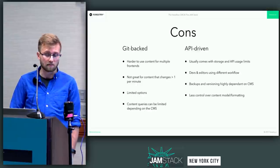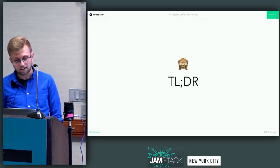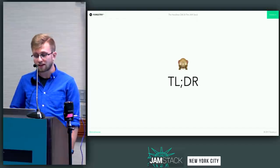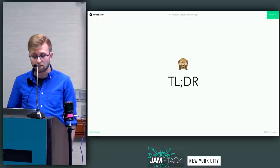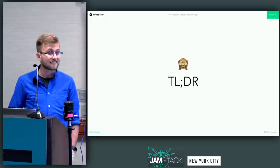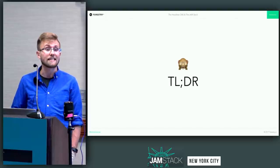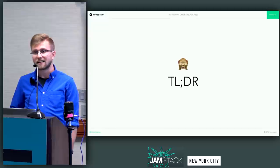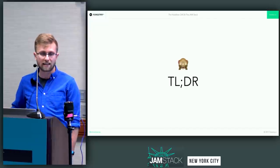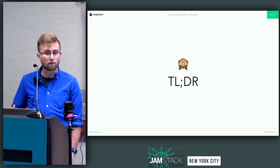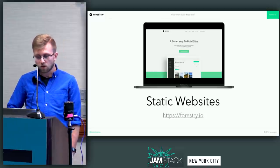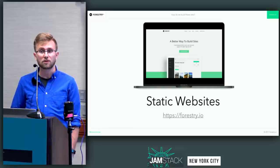The TL;DR: Git-backed is really good for websites that are static-first and can be progressively improved using JavaScript to add dynamic functionality. It's also great for generating other formats like RSS, XML, JSON, or even eBooks. The API-driven CMS is really great for dynamic applications or platforms with a website and mobile apps, or for publications with content that changes rapidly multiple times per minute because you can query that content on the front end with JavaScript.